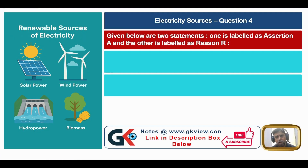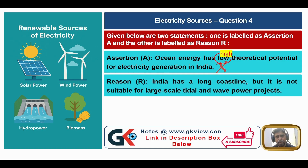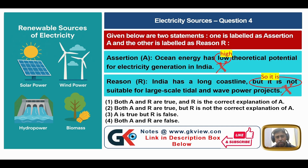Question number four: assertion A states that ocean energy has low theoretical potential for electricity generation in India. This is false — since a major part of India is surrounded by oceans, 'high' is correct. Reason R states that India has a long coastline but it is not suitable for large-scale tidal and wave power projects. This is also false — it should say 'so it is suitable.' Both A and R are false, so the answer is 4.